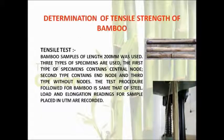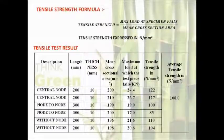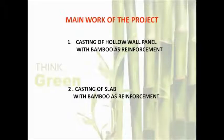This is the third test for determining the tensile strength of bamboo. Two pictures are shown: one of the specimen and one of the testing setup. We are also using the UTM here, applying tensile load to the bamboo to determine its tensile strength. In the next slide, we have tabulated all the test results. The average tensile strength of the bamboo is 108 N per mm square.